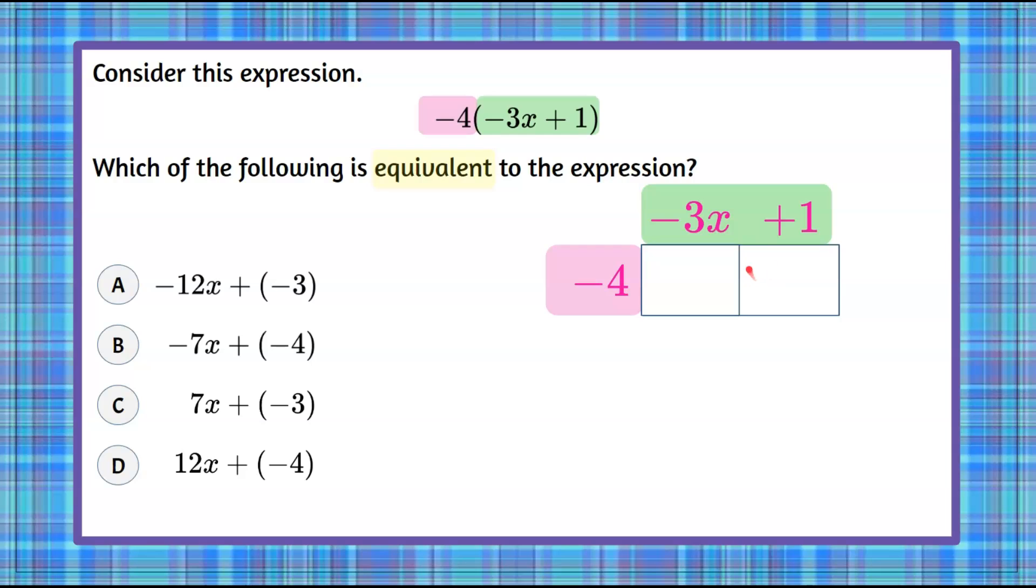So now we're ready. So to find the area of this first rectangle, negative 4, times negative 3x, which is 12x, and then negative 4 is my width and my length, or think of it as base and height. Negative 4 times positive 1 is negative 4.